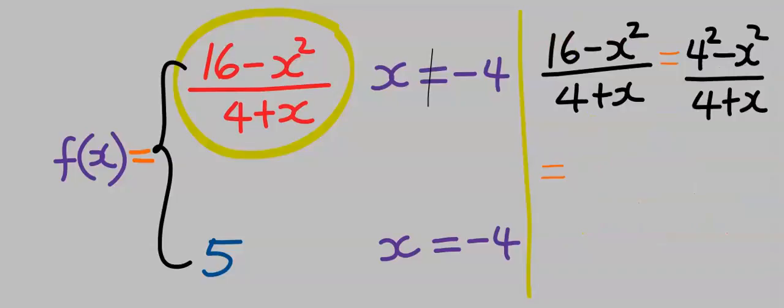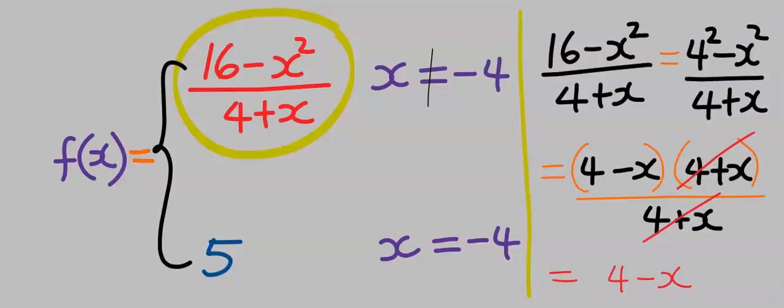Applying difference of two squares, we can now take this out, and we are left with 4 - x. Next, we take the limit of this function as x tends to -4.